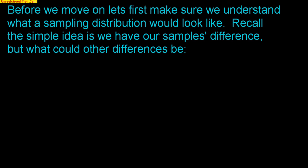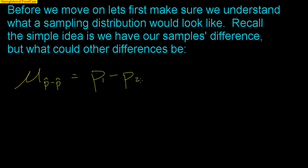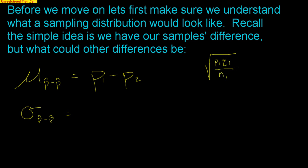Let's look at an example so we can truly understand this. To build a normal model, we need the mean — the expected difference — and the standard deviation. The expected difference is easy: just subtract your two proportions. The standard deviation is a bit trickier. For the first sample, the standard deviation is the square root of P1 times Q1 divided by N1. I'm using ones to represent the first sample — this is the standard deviation formula we've been working with.